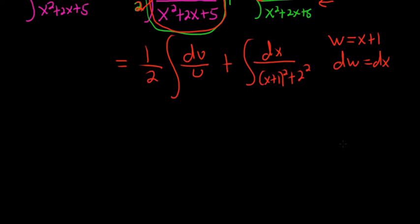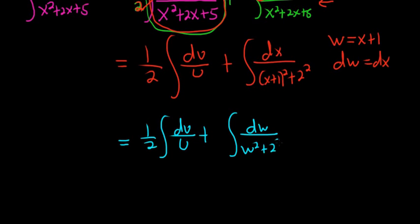So continuing, we have that this is all equal to 1 half integral of du over u plus an integral of dw over w squared plus 2 squared. The formula we'll use for this second integral here says if you have dx over x squared plus a squared, it's equal to 1 over a arctangent of x over a plus c. So we'll use that formula here. a is 2.